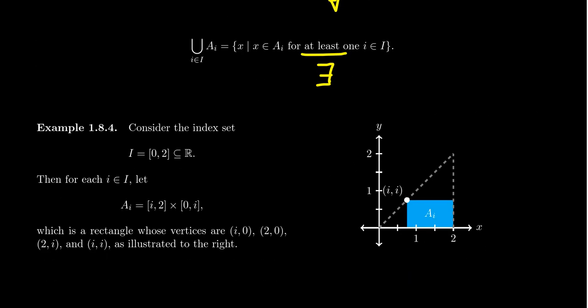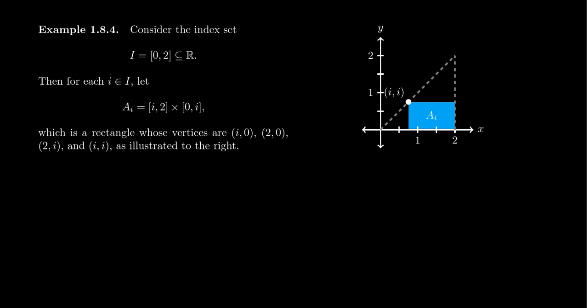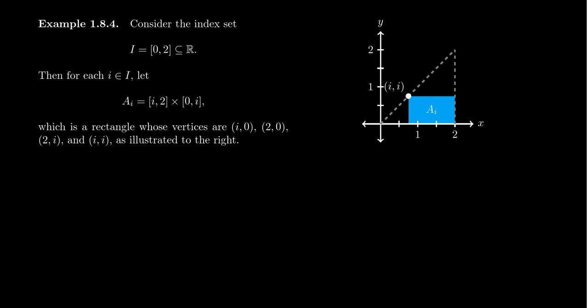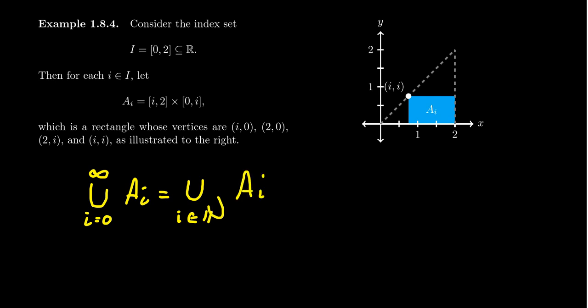We'll talk about this more in the next lecture with the notion of quantifiers — for all is the universal quantifier, and the existential quantifier is for at least one. Now I want to consider an example of an infinite union and intersection where the index set is something other than the natural numbers. When we looked at intersections and unions with infinity on top, ranging from i = 0 to infinity just means the index set is the natural numbers. I want to show a case where the index set is something else.